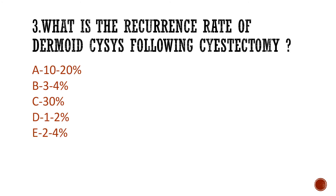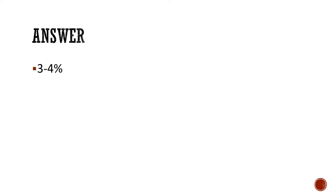Question 3: What is the recurrence rate of dermoid cyst following cystectomy? Is it A) 10–20%, B) 3–4%, C) 30%, D) 1–2%, or E) 2–4%? The answer is 3–4%.